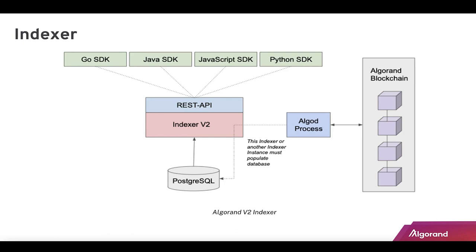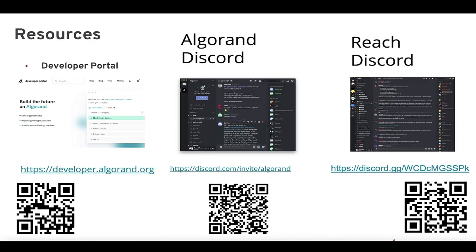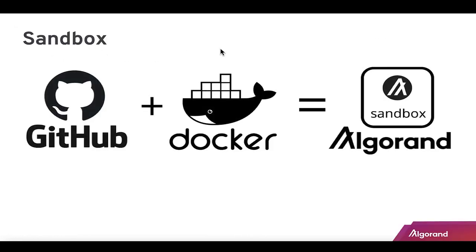Finally on layer one, we have an indexer good for reporting. It offloads data into a PostgreSQL database so you have robust queries and can get at data easily when building reports. To set up your development environment, go to developer.algorand.org — there are great tutorials and getting started guides, even for those brand new to blockchain. There's also the Algorand Discord server — about 30,000 people, 10,000 of which are developers.